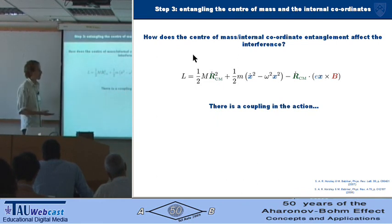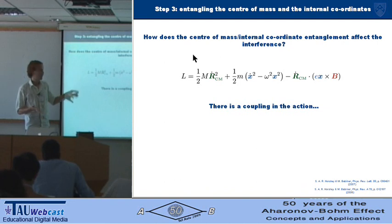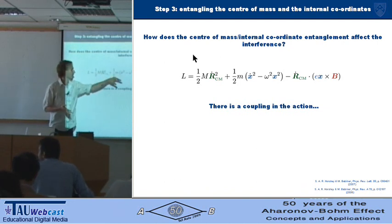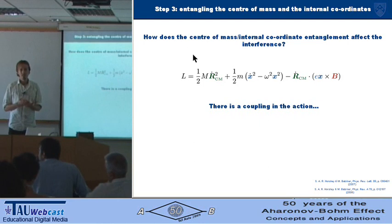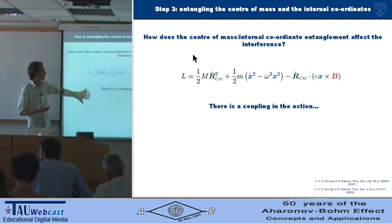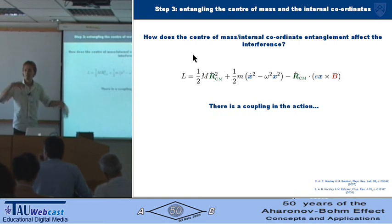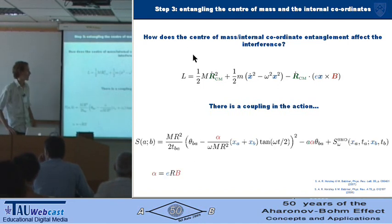So now we want to work out the action. In path integrals there's a theorem that says if the Lagrangian is quadratic in the canonical variables—the r-dots, x-dots, x's, and r's—then all that matters in the path integral is the classical path. So we just need to work out the classical action for this thing, and then we'll know what the coupling is in the phase, and then we can work out the dephasing of the centre of mass within this phenomenon.